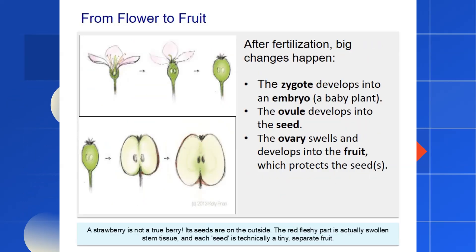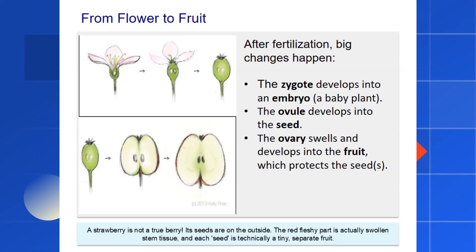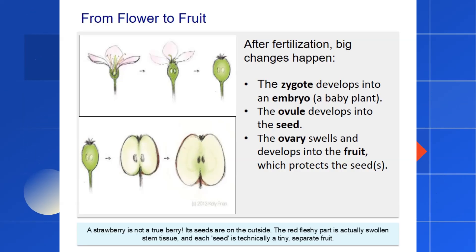After fertilization, the flower's job is almost done, and it begins a beautiful transformation. The petals wither and fall away, as all the plant's energy now goes into developing the future generation. The zygote begins to divide and grow, developing into an embryo — essentially a tiny baby plant, complete with a baby shoot and a baby root. The ovule containing this embryo hardens its outer layer and becomes the seed. And what about the ovary that surrounded the ovule? It swells up and ripens, becoming the fruit. So when you eat an apple or a peach, you're actually eating the mature ovary of a flower, and its main purpose is to protect the seeds inside.